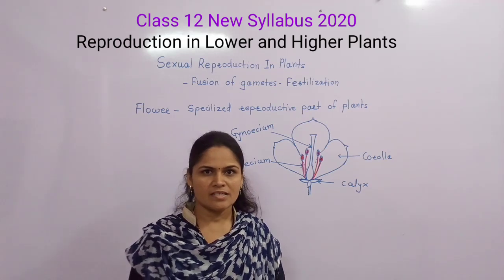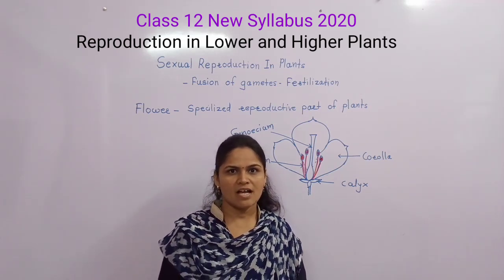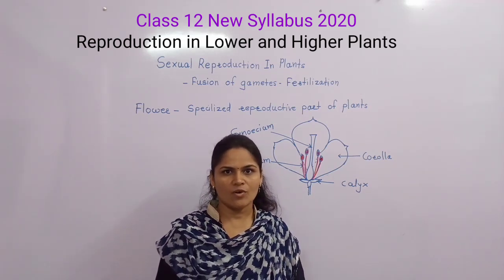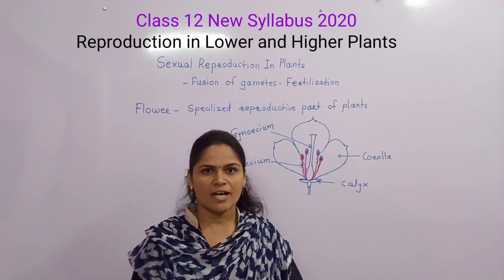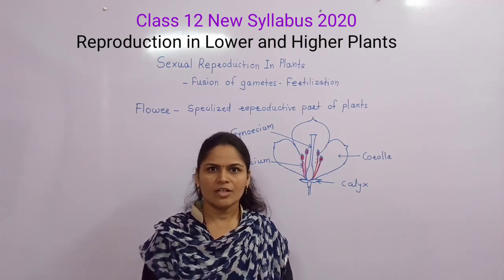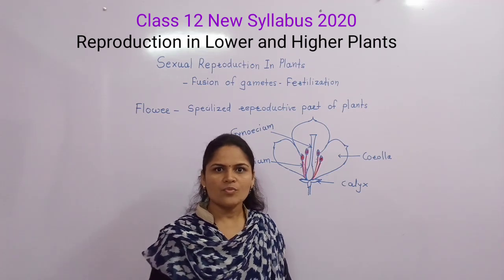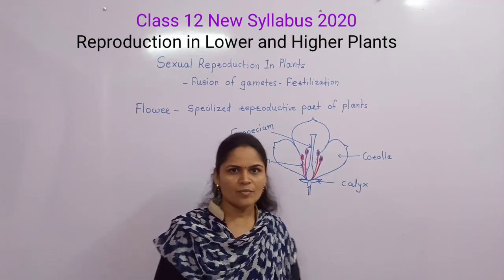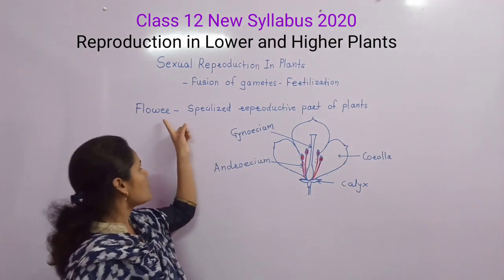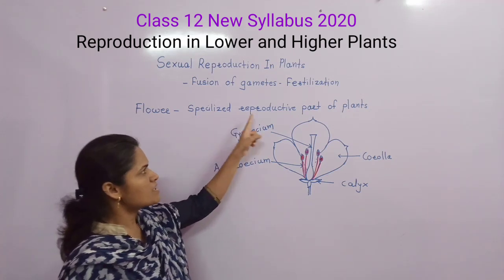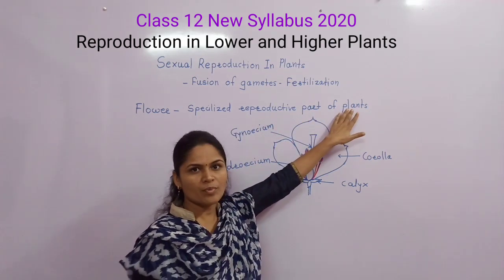But in sexual reproduction, gametes are involved. Gametes are found in the flower. Flower is the specialized reproductive part of a plant.